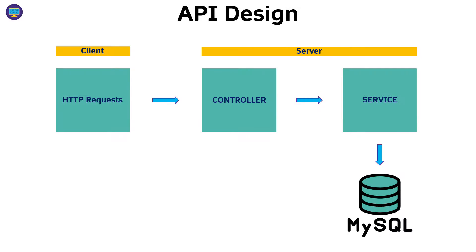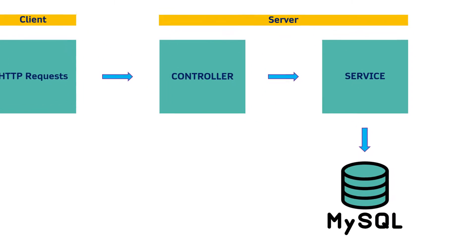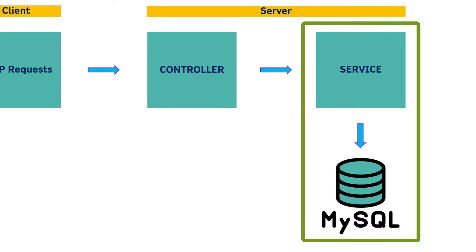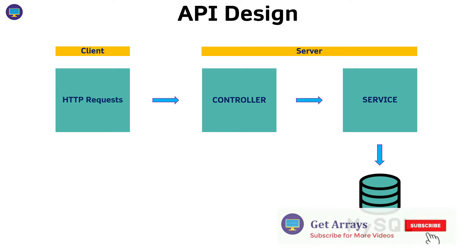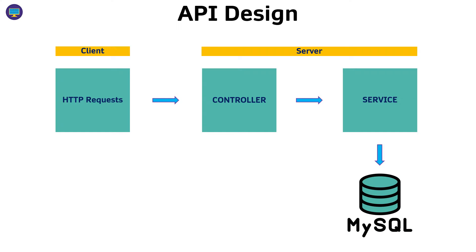I wanted to step back and take a look at the design of this little application that we're building. So right now, we've already worked on the service and the data layer. So now we're ready to have a controller that can access the service and then respond to requests coming in from any client — that can be the browser, Postman or any HTTP client, Curl or anything like that.